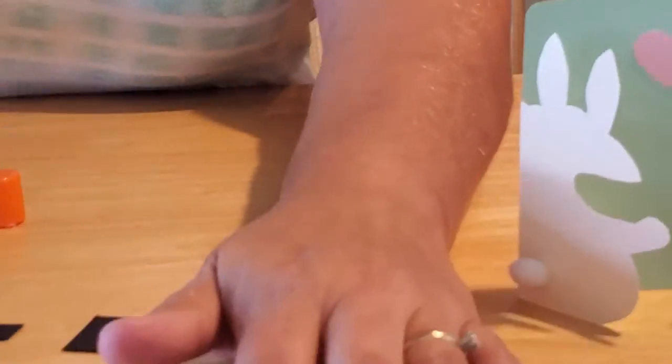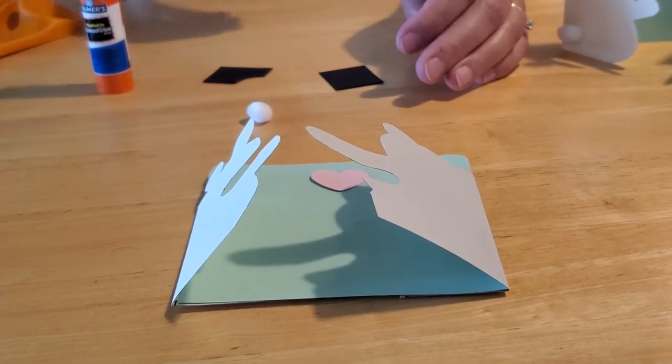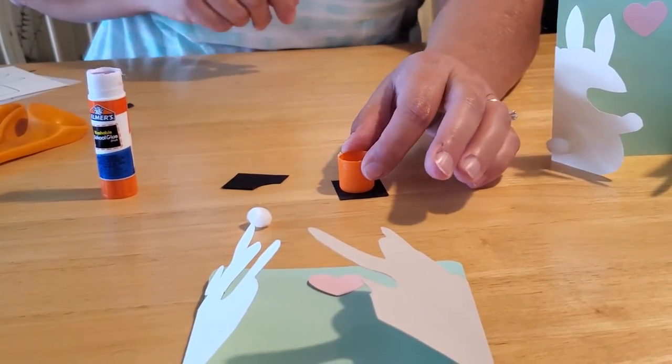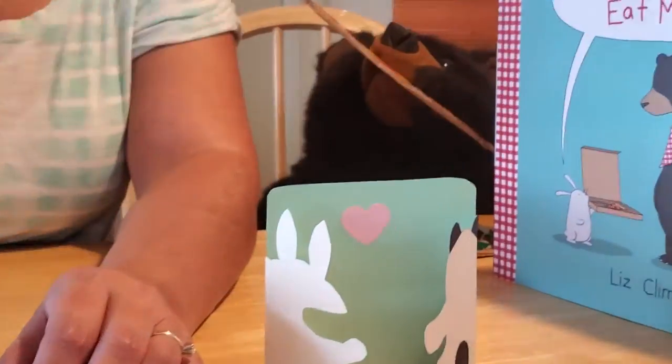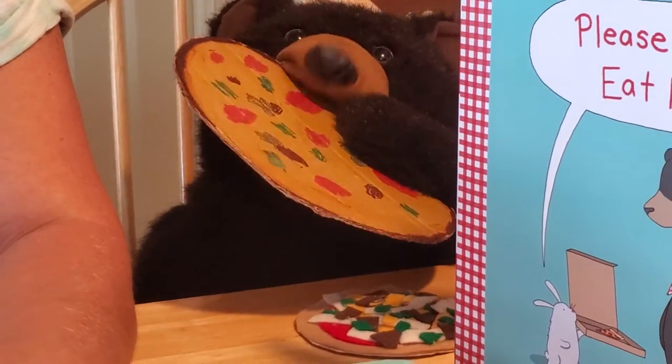Okay, now we're going to have to make our bear's tail and his ears. His tail, we simply took our glue stick cap and we traced it on a piece of black paper with our pencil. I think a pizza would be a little too big for his tail, but thank you Caesar. But you just want to trace your circular cap on a piece of black paper, and then you just want to cut that out.